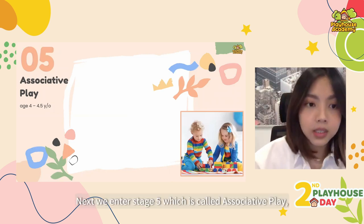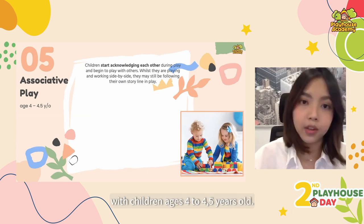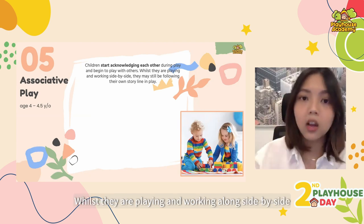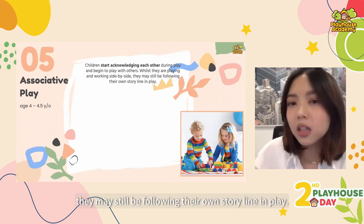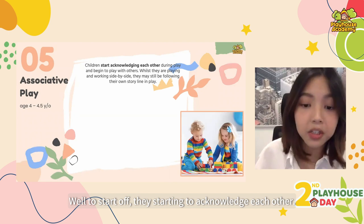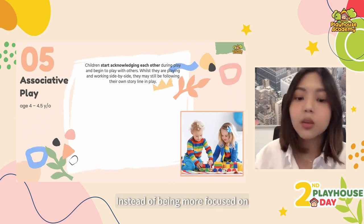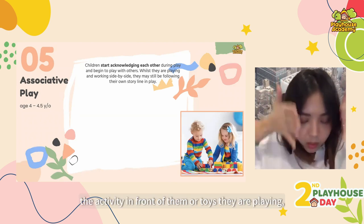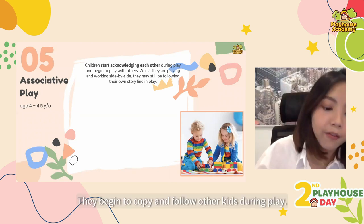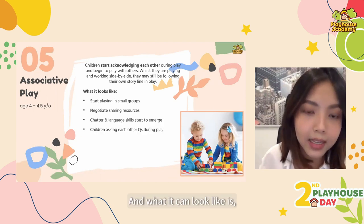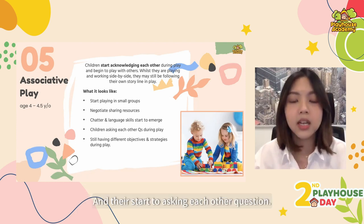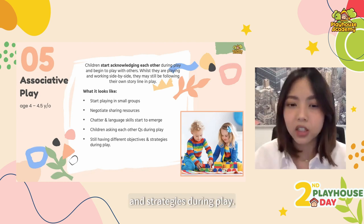We enter stage five, which is called associative play, and this can start to happen with children ages four to four and a half years old. At this stage, children start acknowledging each other during play and they begin to play with other people. Whilst they are playing alongside each other, they may still be following their own storyline in play. How is that different from parallel play? Well, they're starting to acknowledge other children and start doing things together — being more interested in the other players and other kids around them. They begin to copy and follow other kids during play. They start to play in small groups and negotiate while they share resources. Language skills start to emerge and they start to ask each other questions, but they still have different objectives and strategies during play.